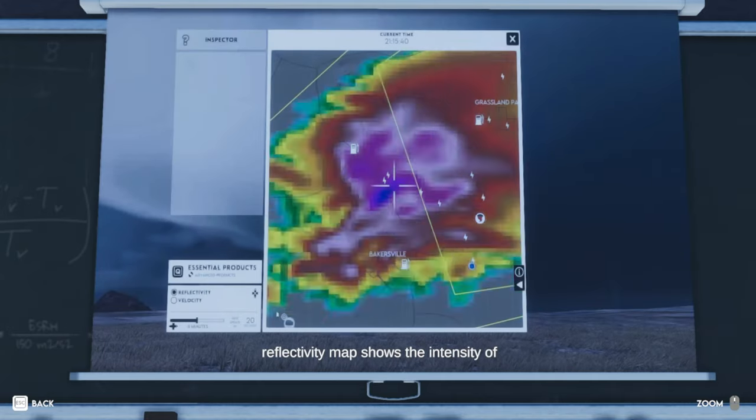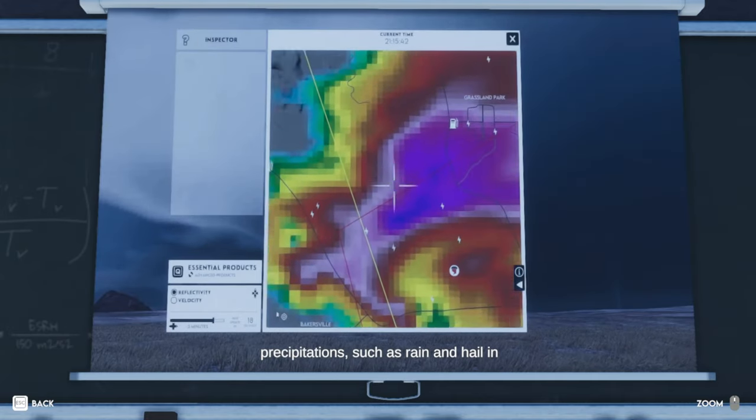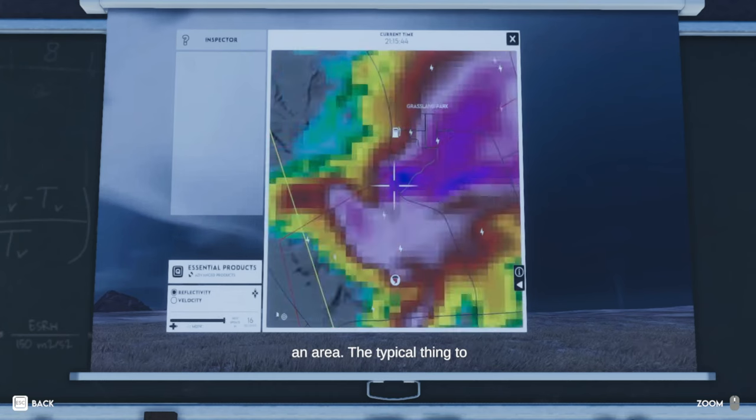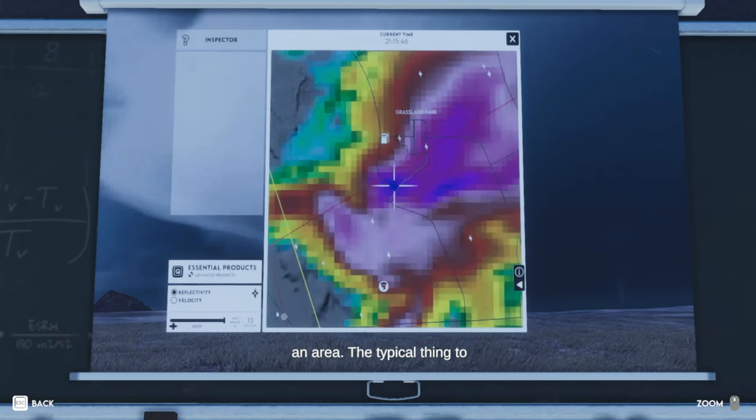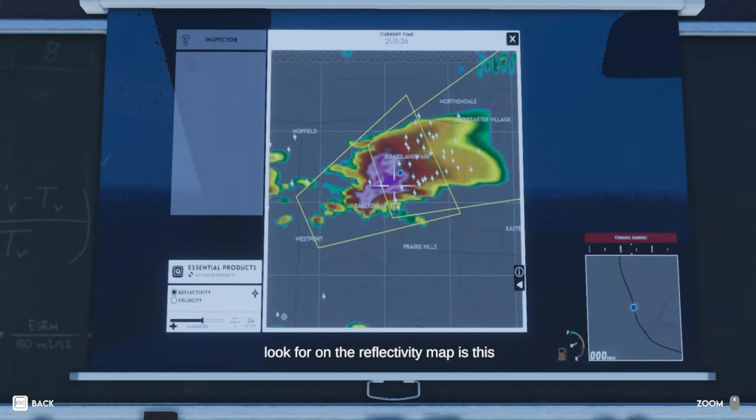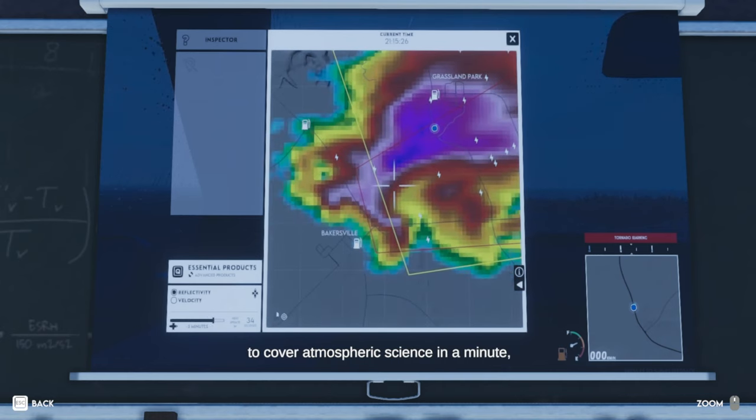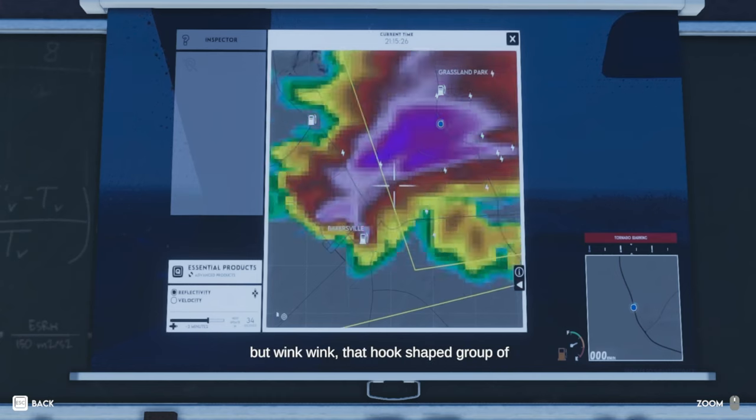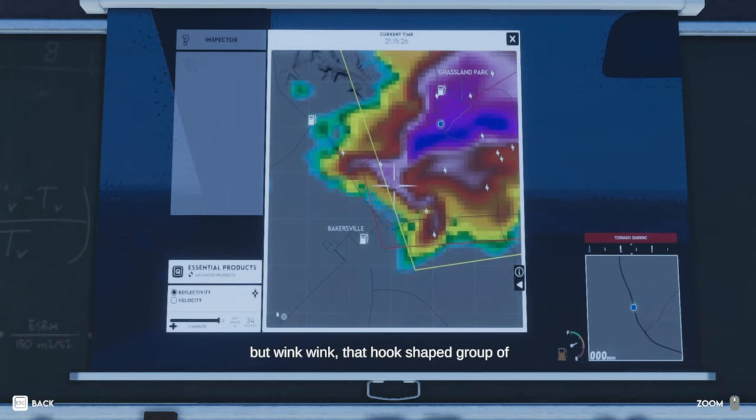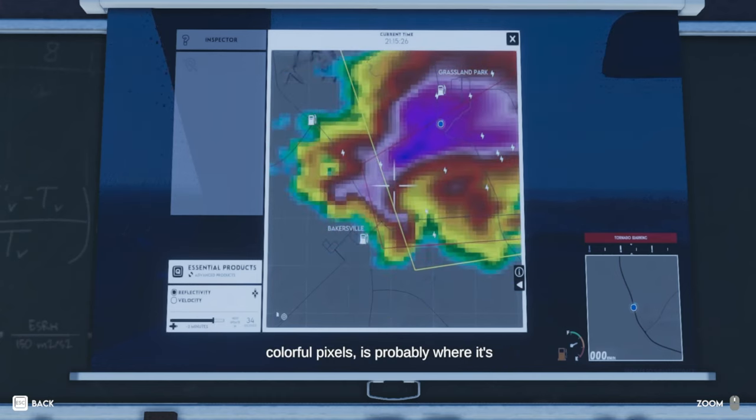The reflectivity map shows the intensity of precipitations such as rain and hail in an area. The typical thing to look for on the reflectivity map is this nice little hook shape. We're not going to cover atmospheric science in a minute, but wink, wink, that hook-shaped group of colorful pixels is probably where it's happening.